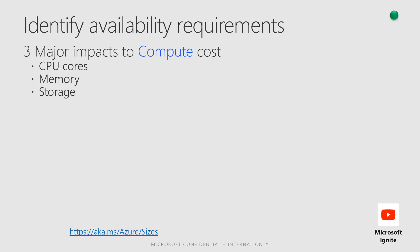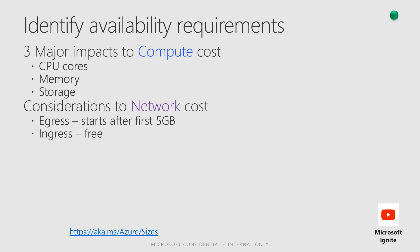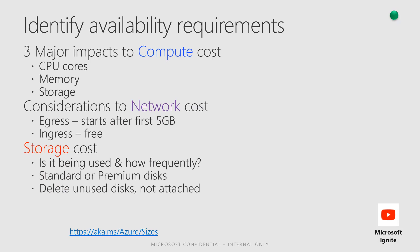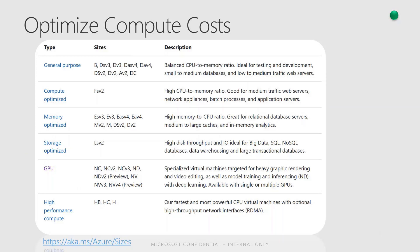When identifying availability requirements, there are three major impacts to compute cost: CPU cores, memory, and storage. For network cost considerations, egress starts after the first five gigabytes and ingress is absolutely free. For storage cost, consider how often and how frequently it's being used, and whether you're using standard or premium disks — and make sure to delete unused unattached disks. When selecting Azure VMs, it's important to be familiar with VM categories. For high-performance compute, choose HPC-optimized; for high memory-to-CPU workloads like relational database servers, choose memory-optimized; and for testing, development, or small to medium databases, general purpose would suffice.